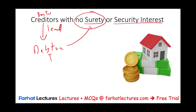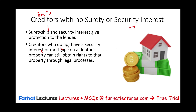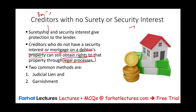Or the creditor might ask the debtor to put up some collateral. For example, when you buy a home, they make you put your home as a security interest, as a mortgage. So they'll give you the money to buy the home, but your home is a security interest. So what happens if the creditors cannot obtain a surety and don't have a security interest? They can still obtain rights to the property through the legal process — specifically through judicial lien and garnishment.